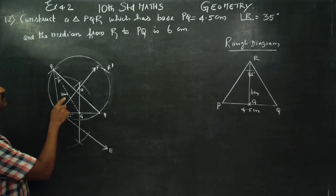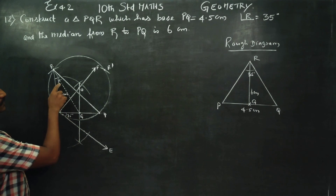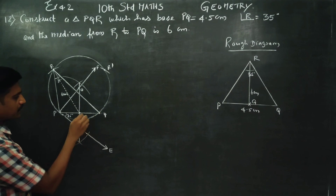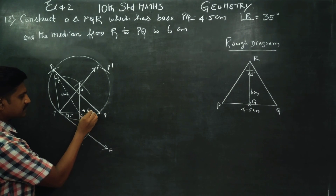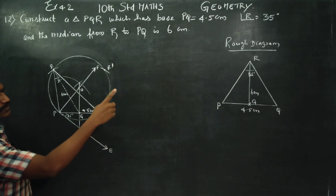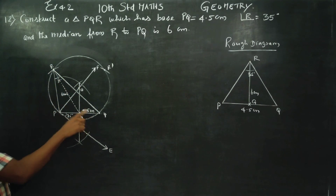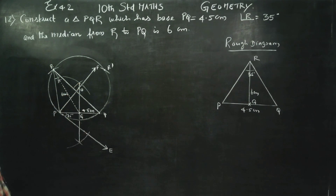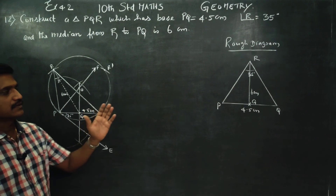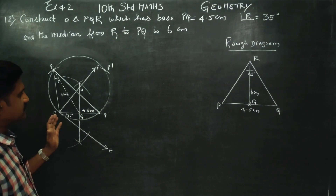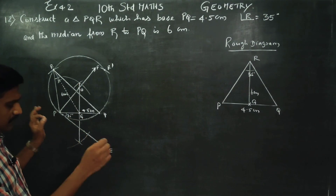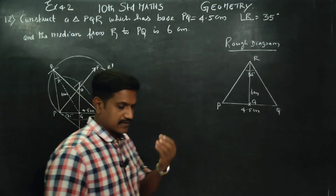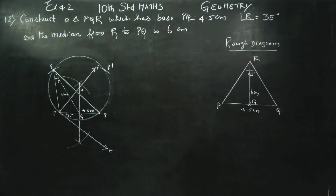Finally, check: the median is 6 cm, the angle is 35 degrees, and PQ measurement is 4.5 cm — 4.5 cm and 35 degrees are correct. This construction carries 8 marks. If you complete the diagram and construction properly, it will give you the full 8 marks.